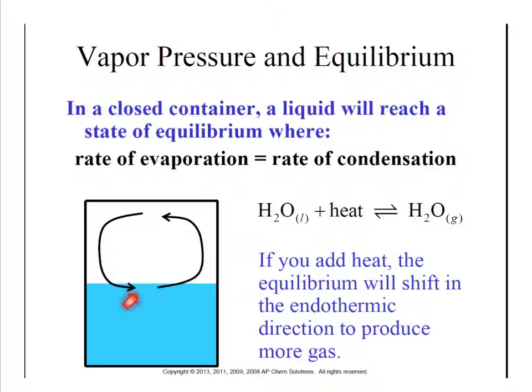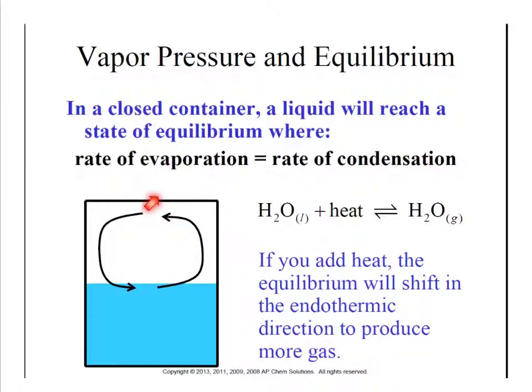The vapor pressure of water at 25 degrees Celsius is about 23.8 millimeters of mercury, or 23.8 torr. But if we heat this up — picture it: if you were to heat a container with liquid, the pressure inside would increase. The reason it increases is because if we look at our equilibrium and add heat, it's going to shift away from that heat — that's Le Chatelier's principle in action. It shifts toward generating more gas, so it's going to increase the rate of evaporation and increase the vapor pressure above the liquid. Water at 90 degrees Celsius, still below boiling point, has a vapor pressure of 526 millimeters of mercury, up from 23.8 at 25 degrees Celsius.